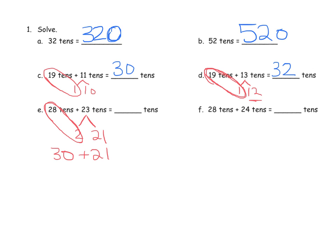Now, students might need to further break this up. They might want to say, well, this is 20 plus 1. And then 30 plus 20 is 50. And then 50 plus 1 is 51. There's a variety of ways that students might get these answers.